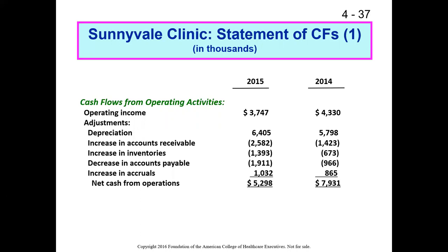For a healthcare delivery organization like a hospital or clinic, operating revenues will be your patient services revenue, plus any ongoing activities that are peripheral but supporting the core patient service business — like the cafeteria or parking fees. So we start with operating income. Sunnyvale in 2015 had operating income of $3.7 million.